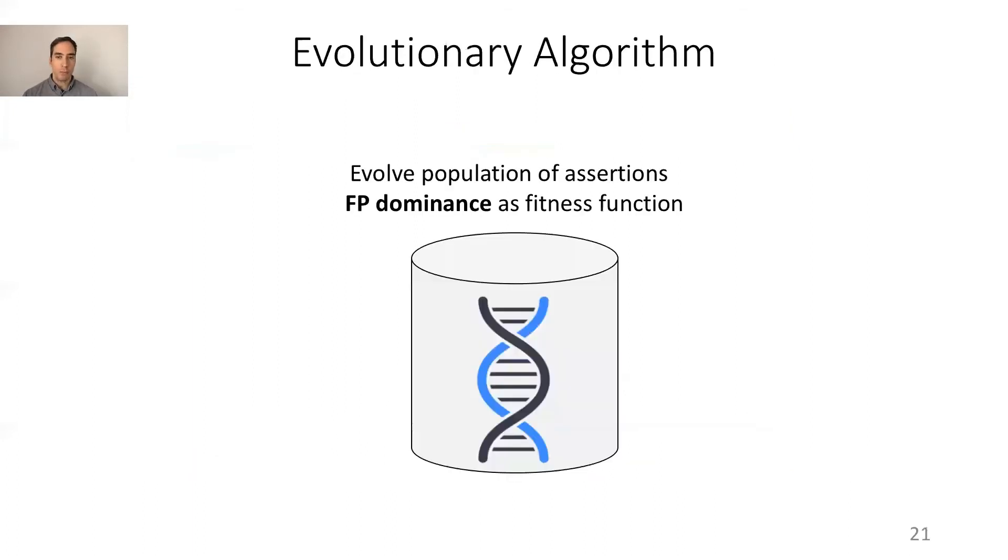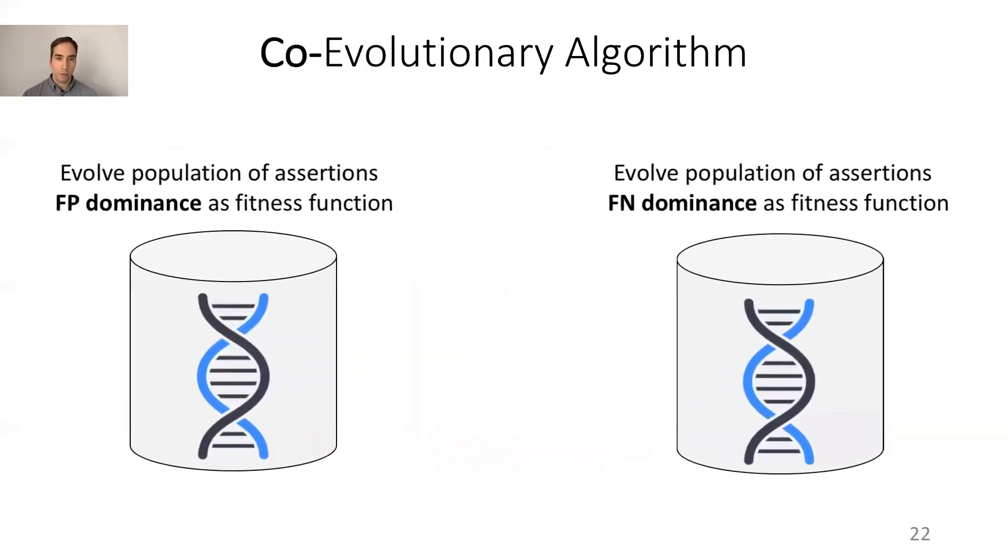We use genetic programming to evolve a population of assertions using FP dominance as the fitness function. However, because reducing the false negatives is only the secondary objective, there might not be enough evolutionary pressure to reduce also the false negatives. For this reason, we propose a co-evolutionary approach that evolves in parallel two populations. One using FP dominance and the other one using FN dominance as fitness function, which uses false negative as the primary objective.